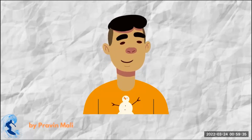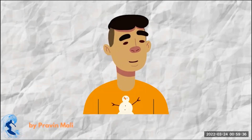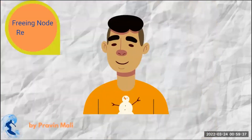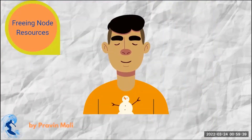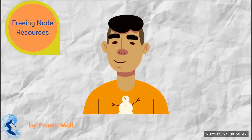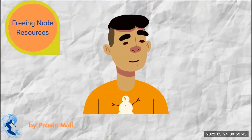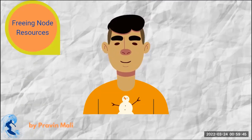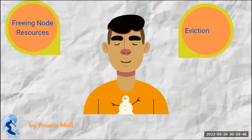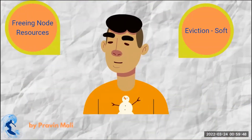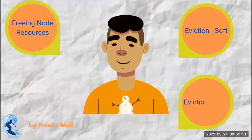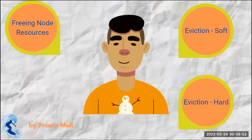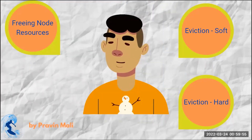In today's video we are going to discuss freeing node resources using container garbage collection. Container garbage collection can be performed using eviction threshold. We will discuss eviction soft and eviction hard parameters in OpenShift. Stay tuned to get more information on this.